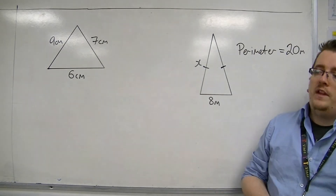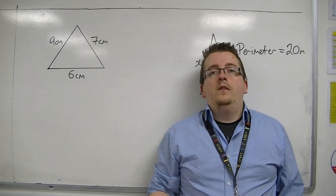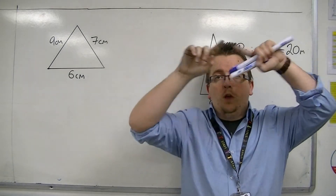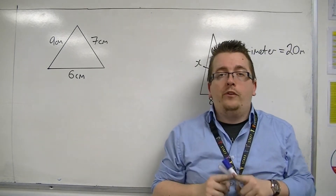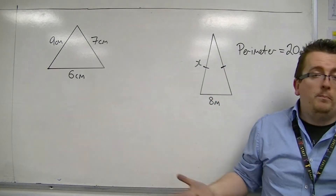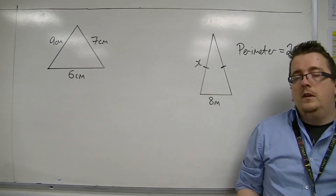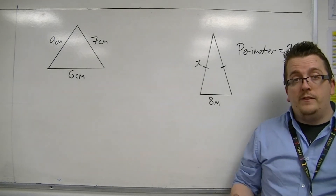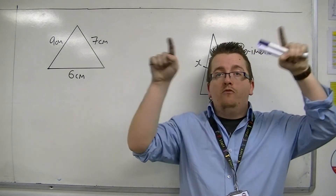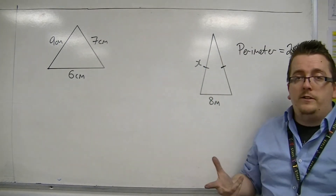If you think about soldiers making a perimeter, they go all the way around the outside of the enemy's base, or the enemy town. If you're thinking about a perimeter fence, then a perimeter fence goes all the way around like a compound, and the length of fence that that would need.